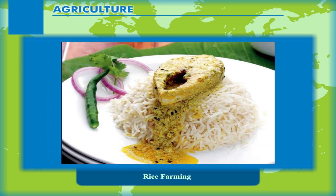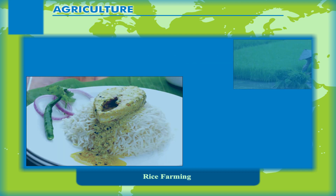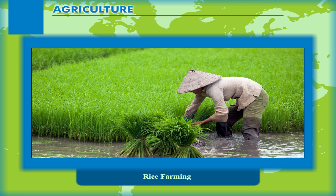About one half of the world population, including the whole of East Asia, use rice as their staple food. Cultivation of rice paddy requires high temperature of over 20 degrees Celsius to germinate, bloom and mature. Rainfall of 100 cm to 150 cm is required for it.